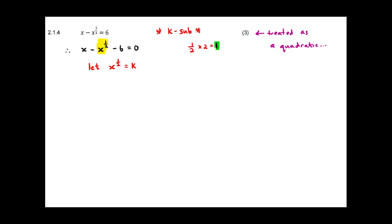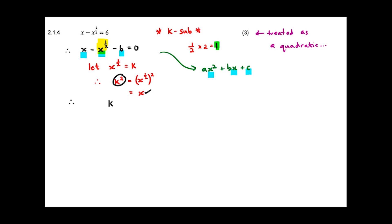The idea is that k squared would be x to the power of a half, all squared, which is just x to the power of one. So I have a squared term, a single term, and a constant term — just like ax squared plus bx plus c. I substitute k in everywhere: x becomes k squared, x to the half becomes k, giving us k squared minus k minus 6 equals 0.